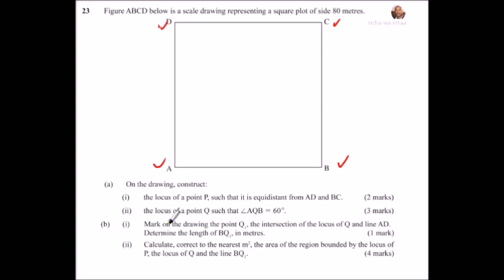The locus of Q such that AQB, we will draw an angle of 60 here. We draw an angle of 60, bisect it. So it means on this side we will get an angle of 60. We draw an angle of 60 here, we bisect. Here we use the property of the angle at the center is twice the angle at the circumference, that is in chords and circles.